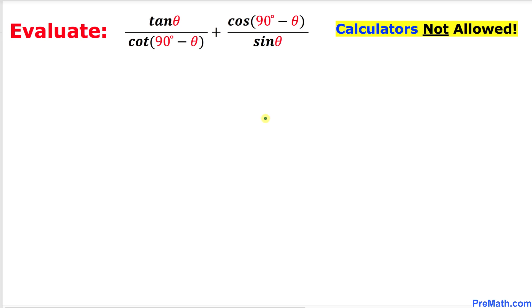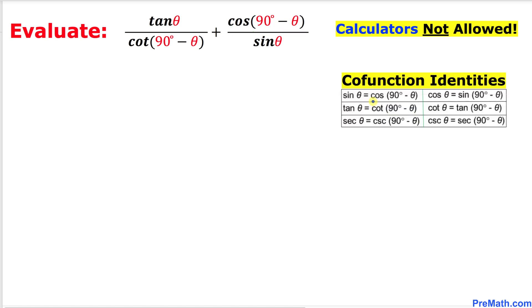Here is our very first step. Let's focus on this cosine of (90° - θ). Here are our co-function identities. We can see that cosine of (90° - θ) could be written as sine of θ. So therefore, this cosine of (90° - θ) in the numerator could be replaced by sine of θ.